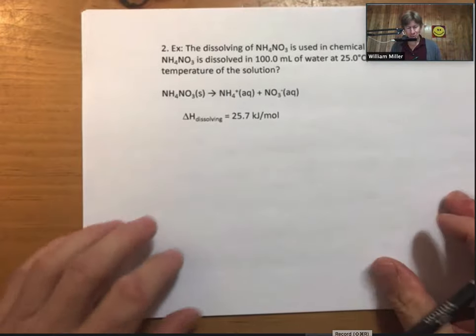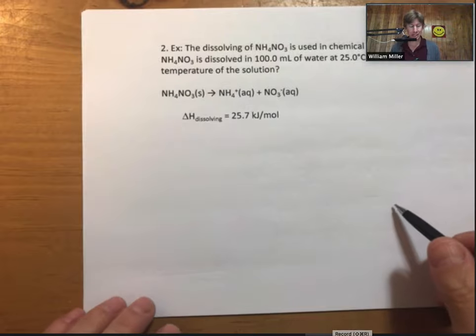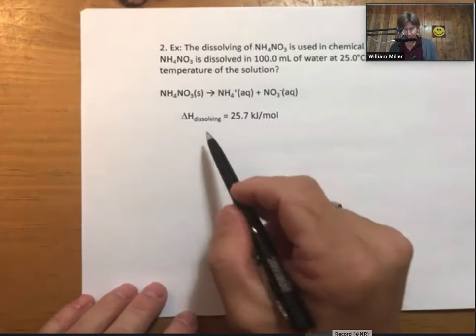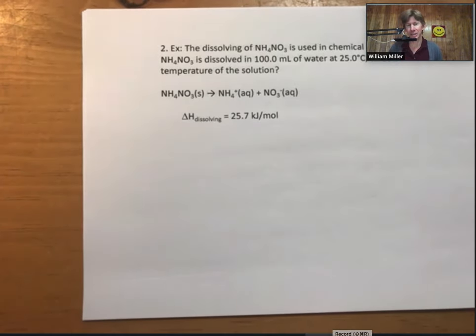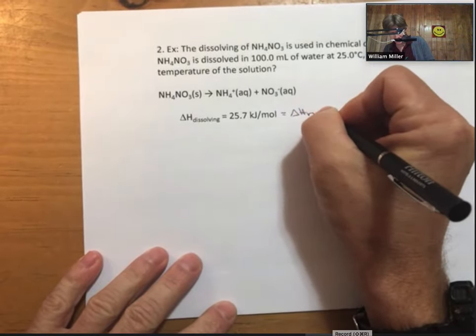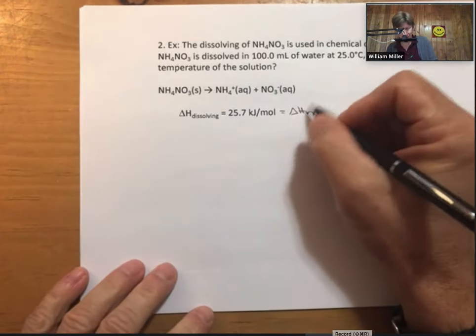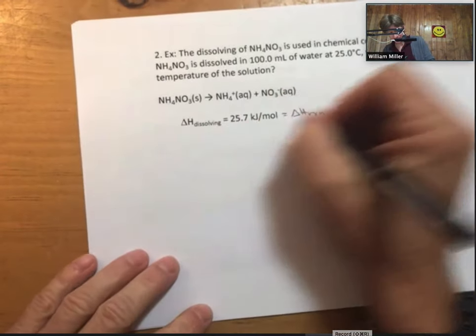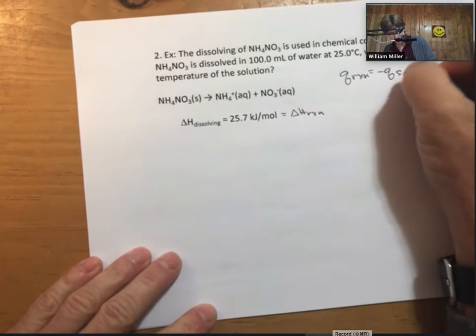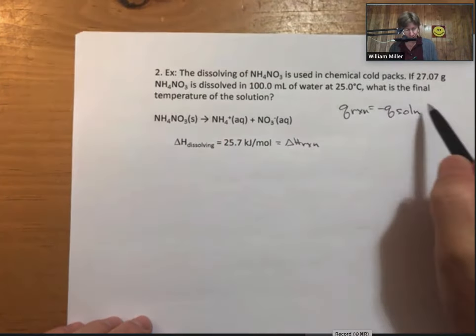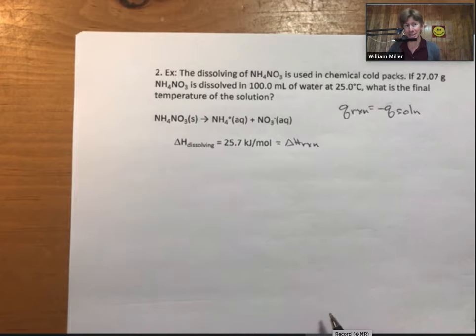This is another example - the dissolving of ammonium nitrate is used in chemical cold packs. We have been given the dissolving reaction. Delta H dissolving - so this is a delta H reaction for a specific type of reaction. We've used the subscript dissolving, but we could have very easily just used delta H reaction. Dissolving is a specific example of a type of reaction. Minus q reaction equals minus q solution. What is the final temperature? The final temperature is going to be part of the q solution term, so we'll solve for that part second.